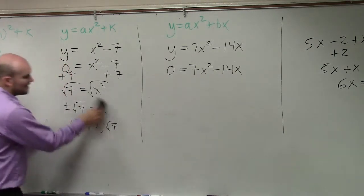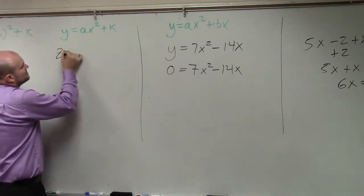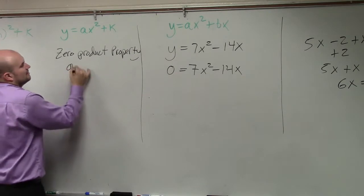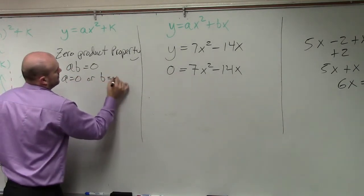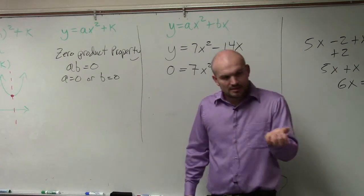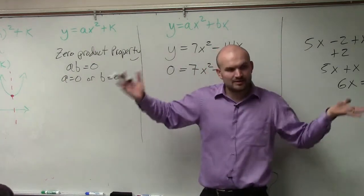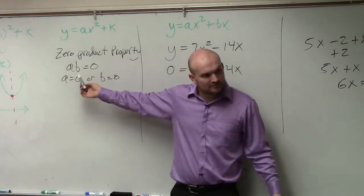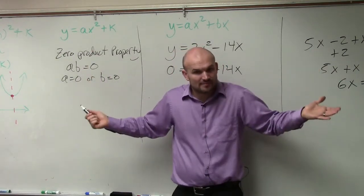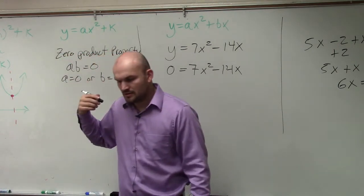So now what we need to look into, we need to use a very, very, very important property, which is called the zero product property. What the zero product property states is: if you have the product of two terms and they equal zero, then one of those numbers has to be zero — or both of them. Think about numbers you know — the only way for a product to give you zero is if one of them is zero.